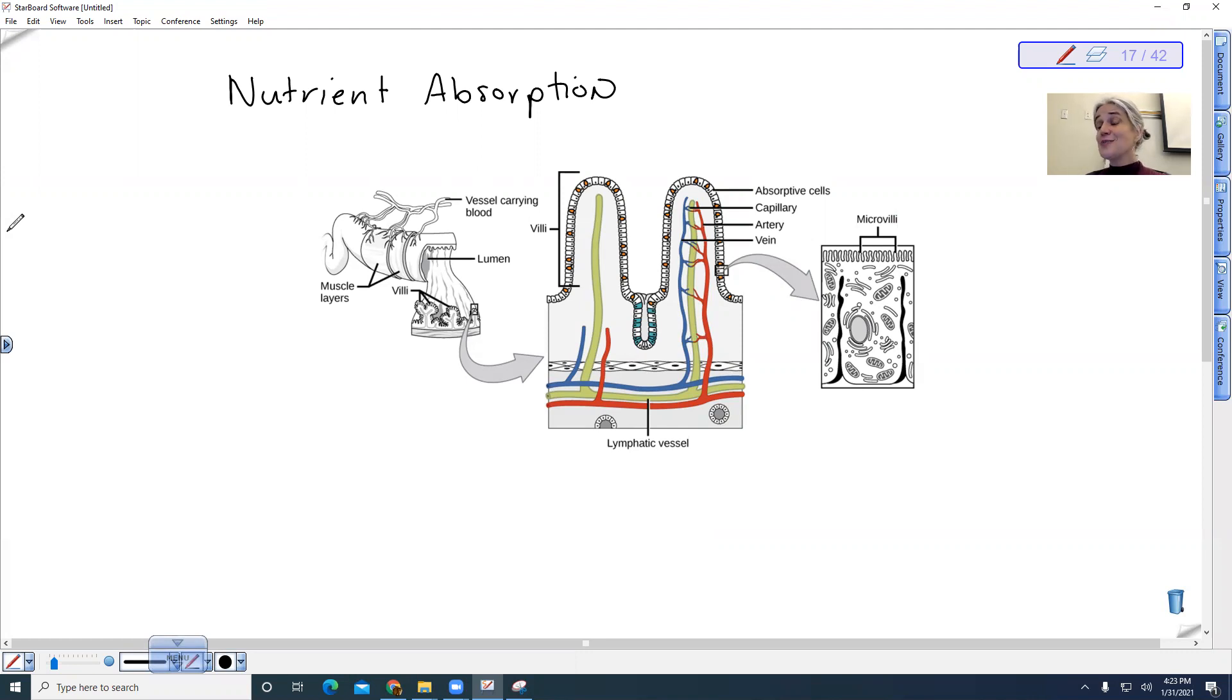When we talk about the small intestine, there's actually three components. So we have, in order, the duodenum, we have the jejunum, and then we have the ileum.